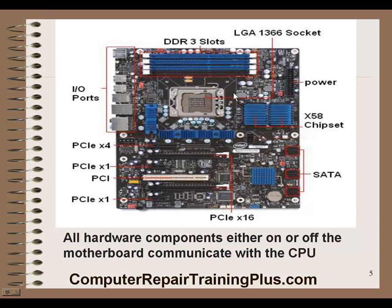Here's an example of a motherboard. On the top we've got some DDR3 slots — these are DIMM slots for memory. There's an LGA 1366 socket. This is a fairly newer motherboard with the X58 chipset, which is your North Bridge, but it's not the memory controller anymore because this is the new Core i7. The memory controller is now on the CPU, which really speeds things up. All hardware components, either on or off the motherboard, all have to communicate with the CPU.